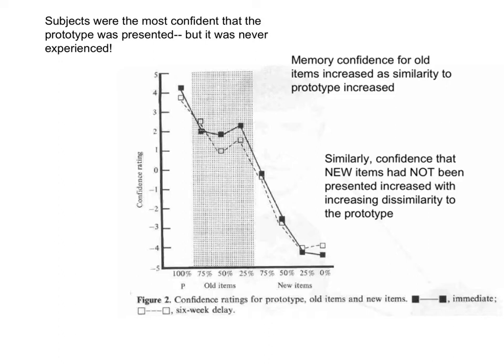Now let's look at the results. Interestingly, the results from the short and long delays were very similar, indicating long lasting memory for the face stimuli. We will treat the two different retention interval conditions as if they were the same, because the results were the same. Look at the y-axis, which shows memory confidence. A zero would indicate no confidence — that is, guessing whether the item was old or new. Increasing positive numbers indicate increasing memory confidence that the item was old, that is, had been previously presented. Increasing negative numbers indicate increasing memory confidence that the item was new, that is, had not been previously presented.